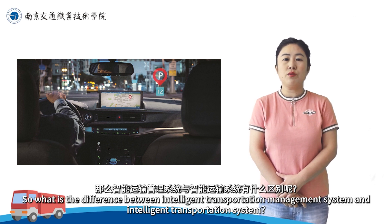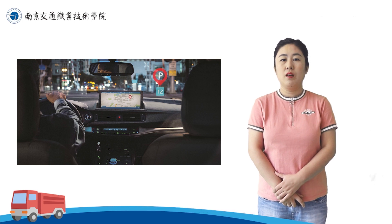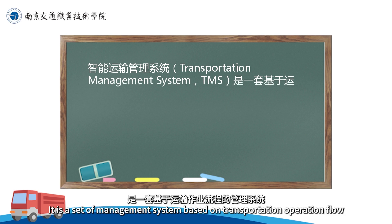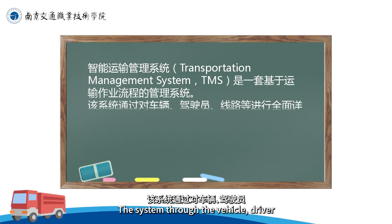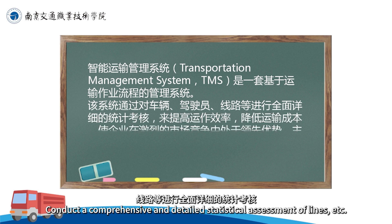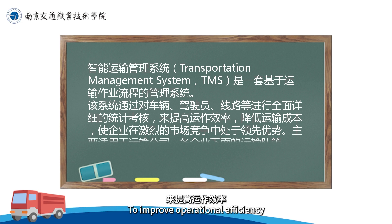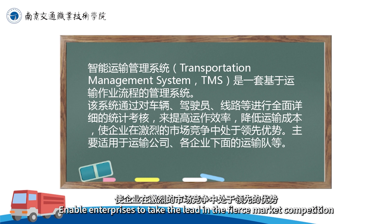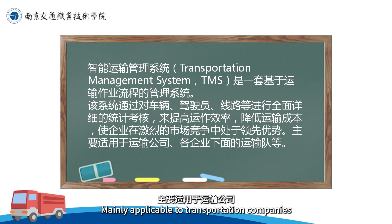上一次我们了解了智能运输系统，那么智能运输管理系统与智能运输系统有什么区别呢？运输管理系统，简称TMS，是一套基于运输作业流程的管理系统。该系统通过对车辆、驾驶员、线路等进行全面详细的统计考核，来提高运作效率、降低运输成本，使企业在激烈的市场竞争中处于领先优势，主要适用于运输公司及各企业下面的运输车队等。